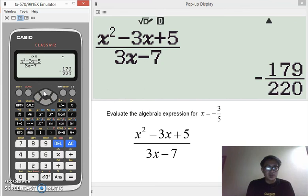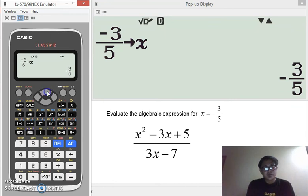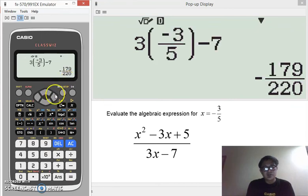We can review that calculation by pressing the arrow cursor key up. So, here. So, you see it's negative 179 over 220.